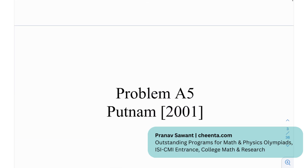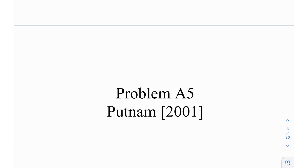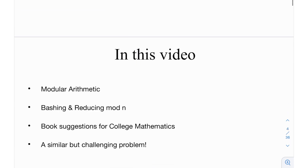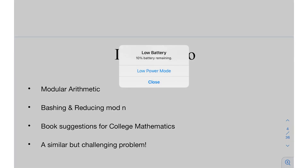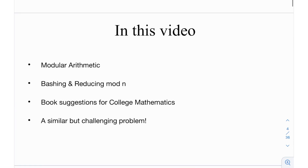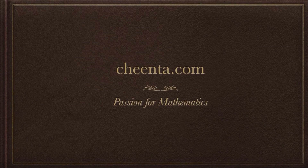This is problem A5 from the Putnam exam in 2001 — the second to last problem on the morning section, and it's pretty hard. In this video we'll be looking at what modular arithmetic is, reducing mod n, bashing techniques, and after that we'll look at certain book sessions for college mathematics and a similar challenging problem at the end. This video is sponsored by Chinta.com.